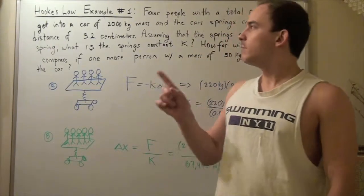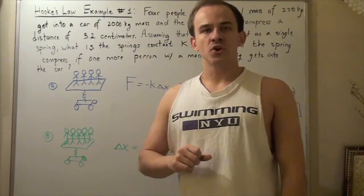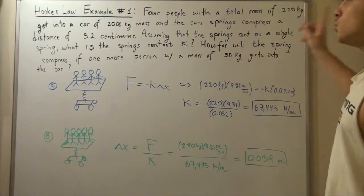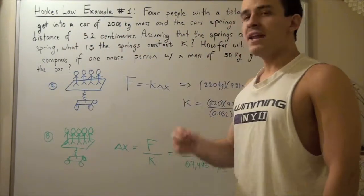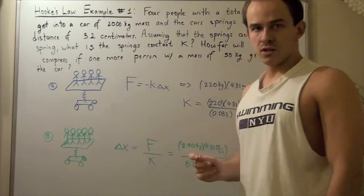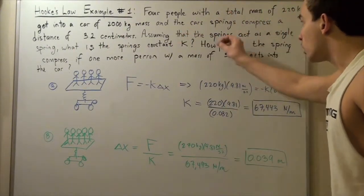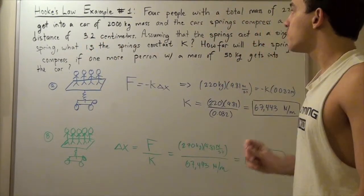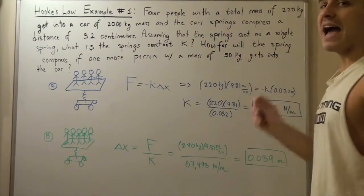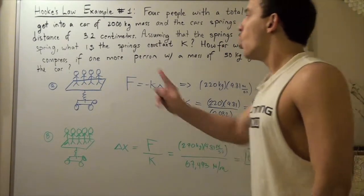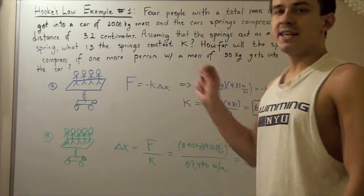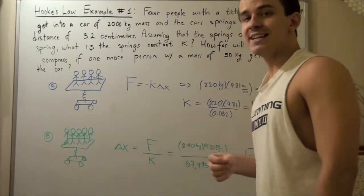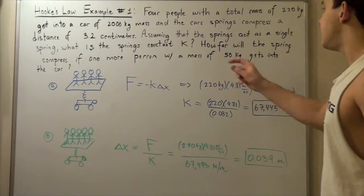So let's look at example number one that deals with Hooke's Law. Four people with a total mass of 220 kilograms get into a car that has a mass of 2,000 kilograms. And the car springs compress a distance of 3.2 centimeters. Assuming that the springs act as a single spring, what is the spring's constant k and how far will the spring compress if one more person gets in whose mass is 50 kilograms?